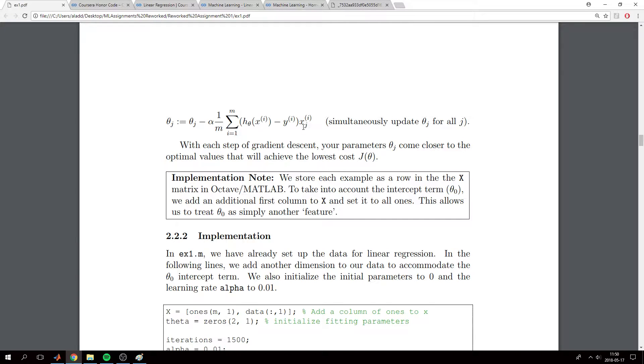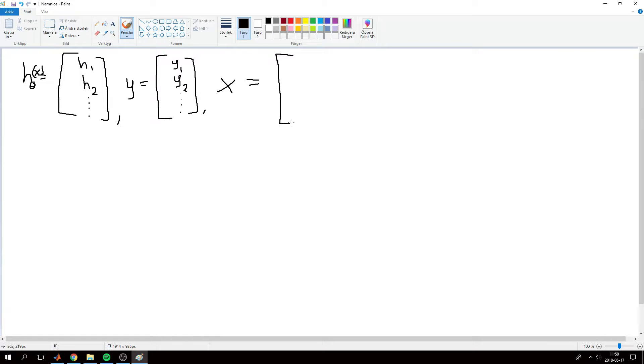And then we have x, which will be x feature 0 and x feature 1, both vectors. This can be written as x feature 0 training example 1, x feature 0 training example 2, and similarly for x feature 1. X will be a 97 by 2 vector.